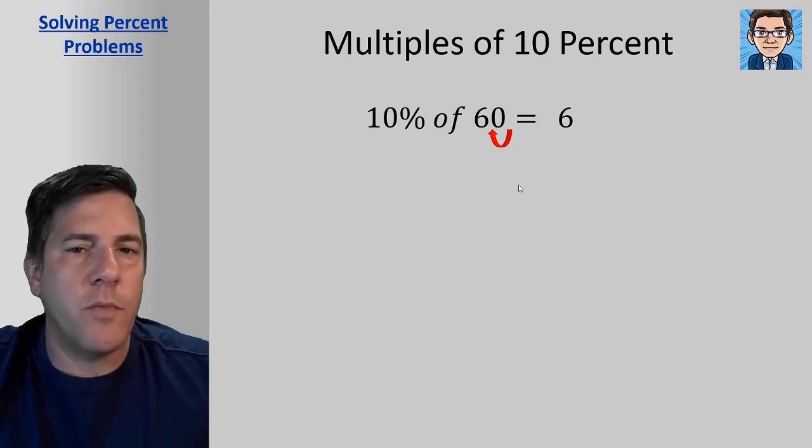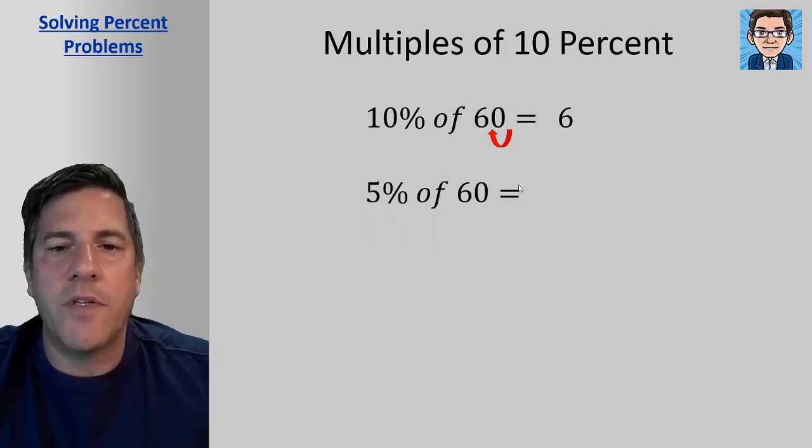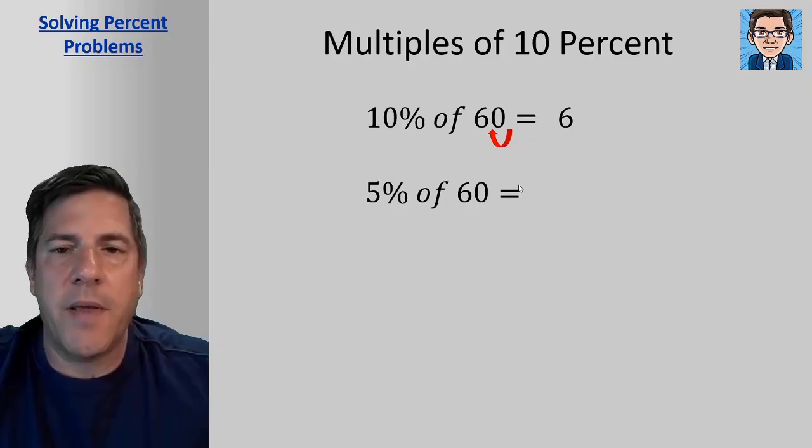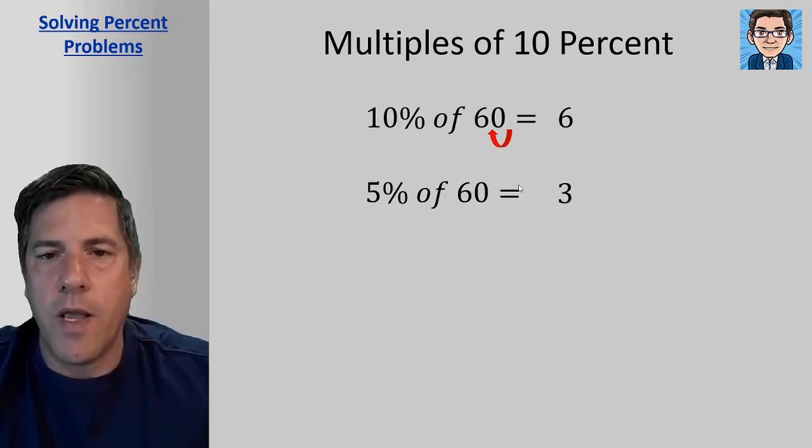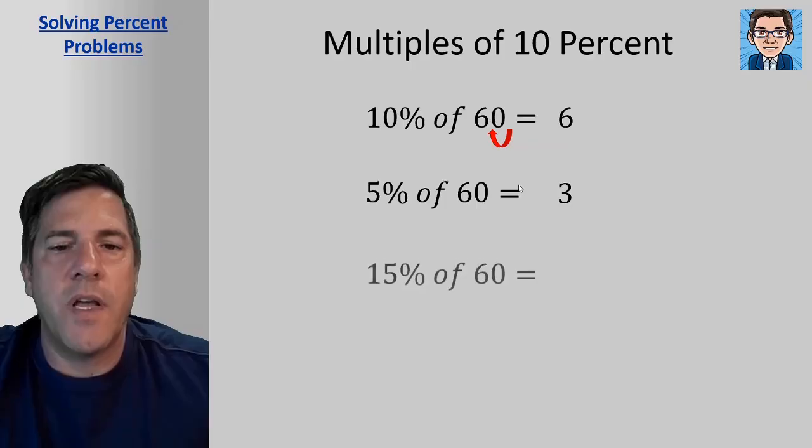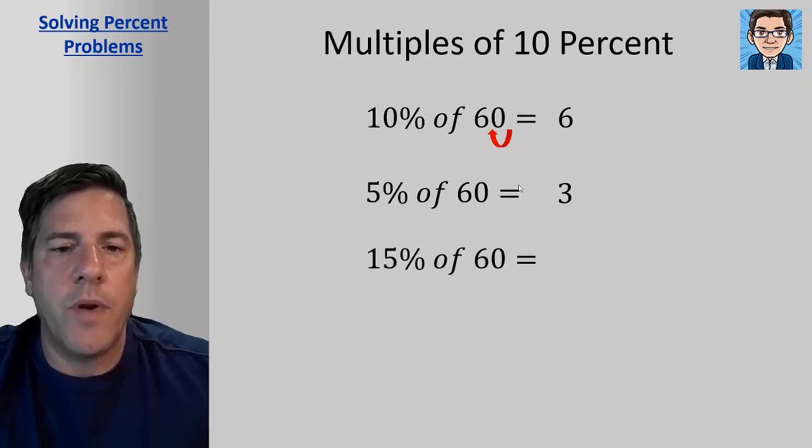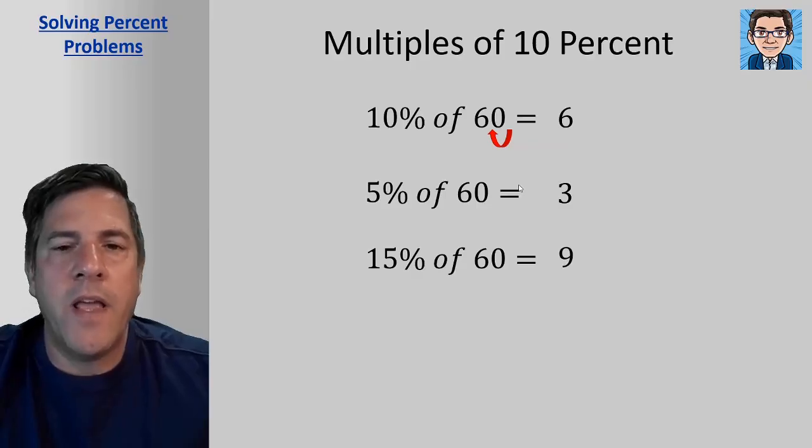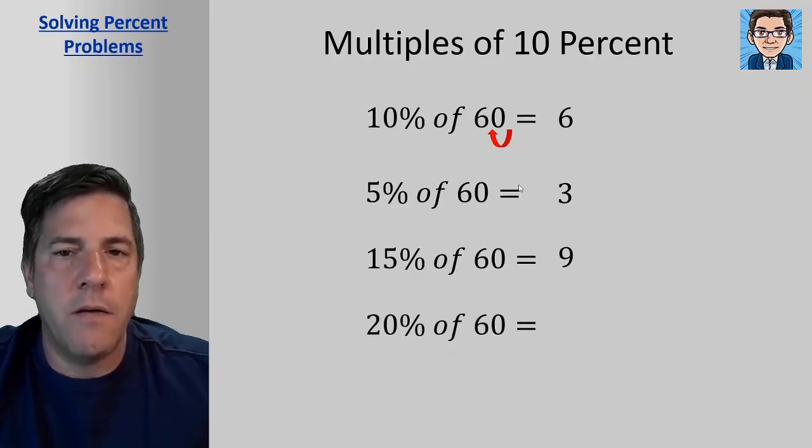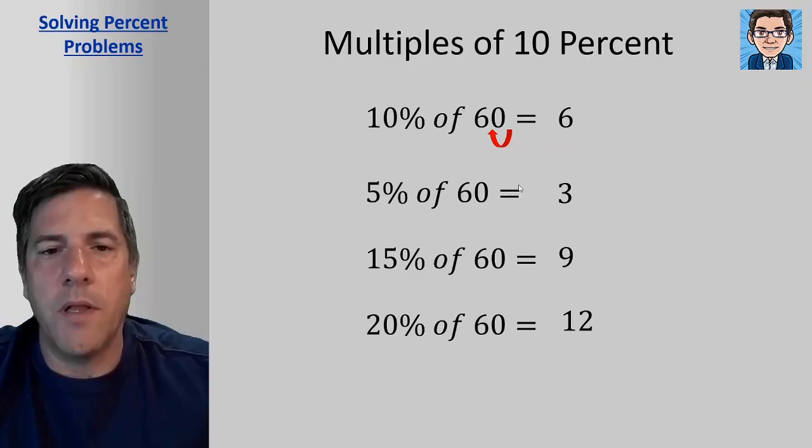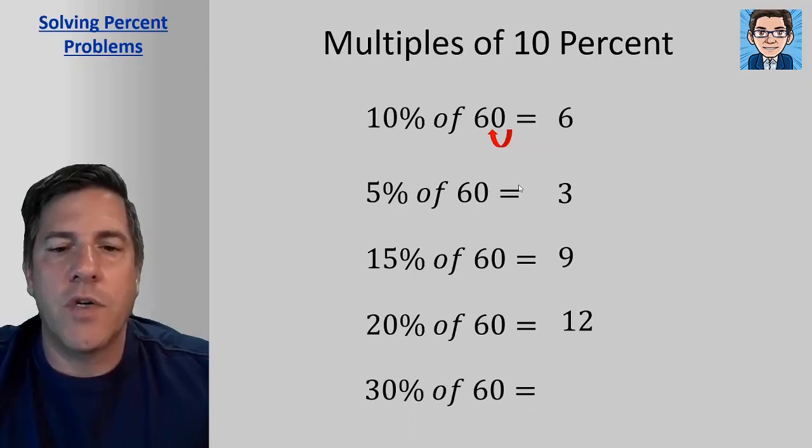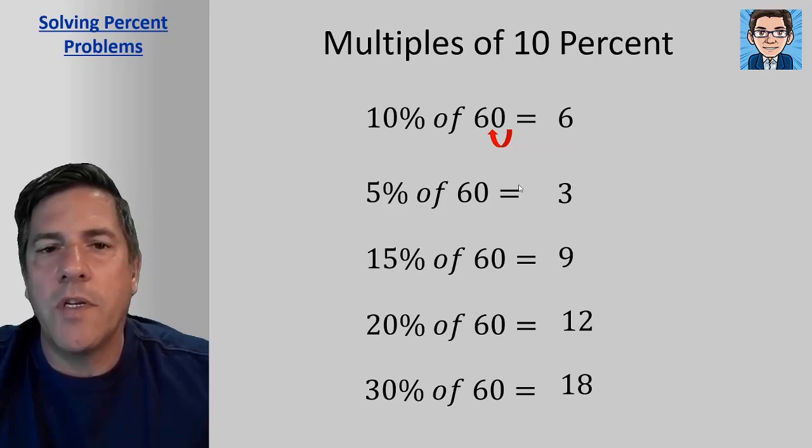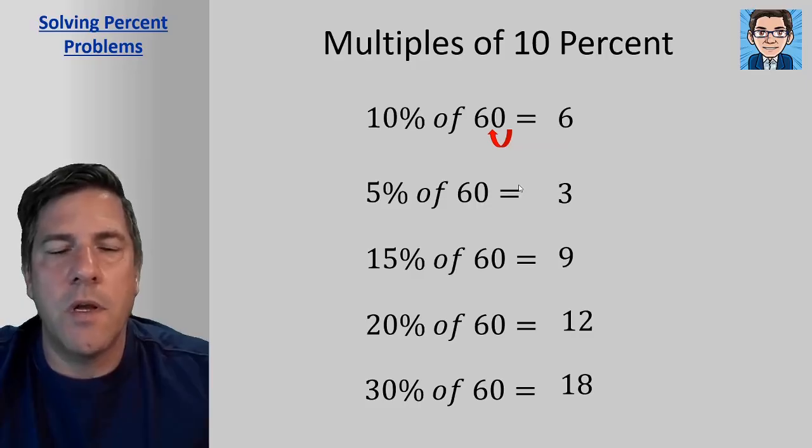So then we can use that for other multiples as well. So 5%, if 10% is 6, then 5% is just going to be half of that or 3. If we did 10% and 5%, we would get 15% or 9. Just add the six and three and get nine. If 10% is 6, then 20% is going to be 12. We just double it. And if 10% is 6, then we can triple it to get 30% or 18. So if you have multiples of 10%, they're pretty easy to work with. Just figure out what 10% is first and then take multiples from there.